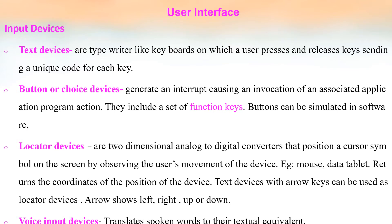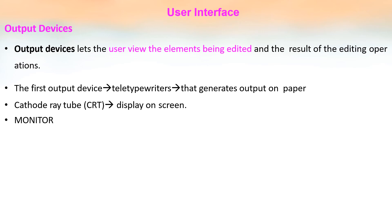Input devices include: text devices like typewriter-style keyboards for giving input; button or choice devices such as function keys, where pressing a button generates an interrupt invoking an associated application; locator devices such as the mouse, which returns a coordinate position; and voice input devices that translate spoken words to their textual equivalent. Output devices let the user view the elements being edited. Earlier, typewriters generated output on paper; now cathode ray tubes and monitors are used as output devices.